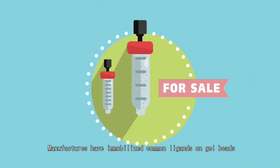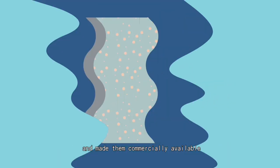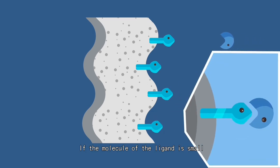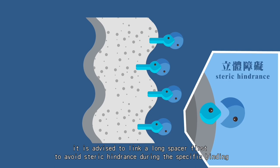Manufacturers have immobilized common ligands on gel beads and made them commercially available. We may also purchase activated gel beads and immobilize proper ligands on them to suit our particular purpose. If the molecule of the ligand is small, it is advised to link a long spacer first to avoid steric hindrance during the specific binding.